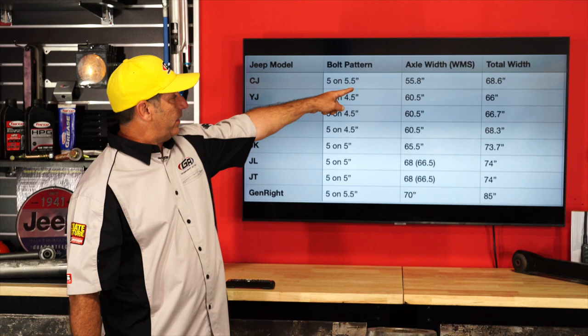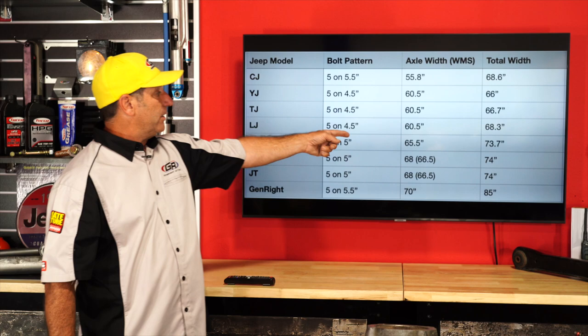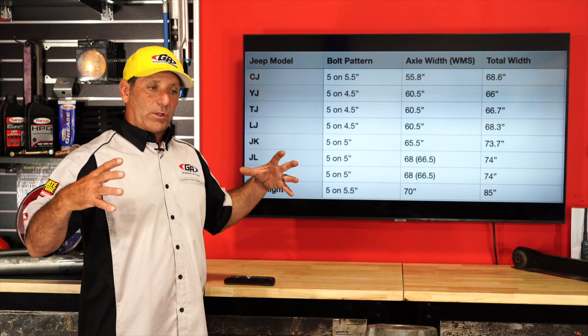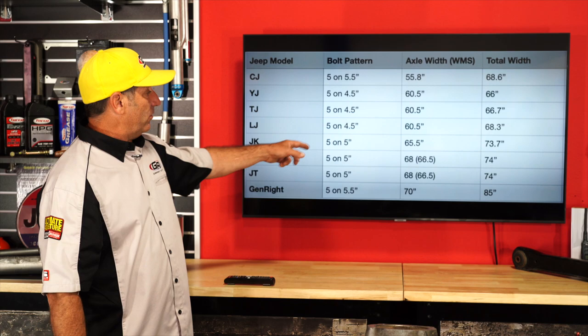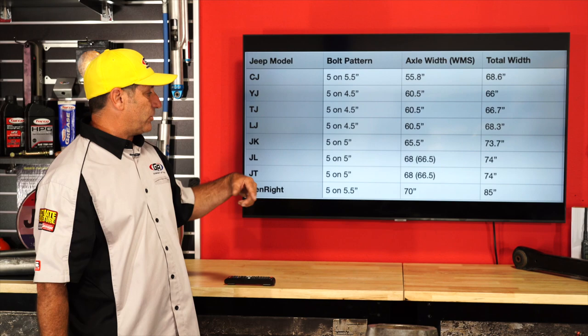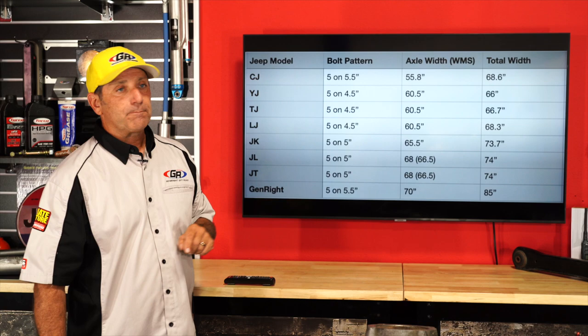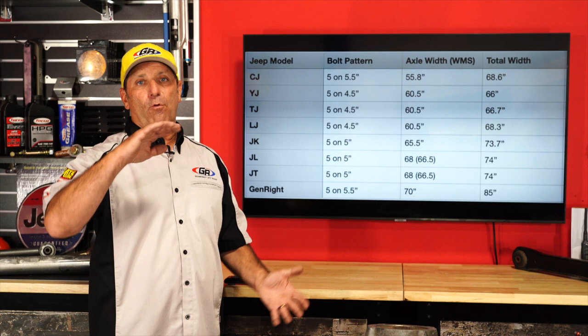The YJ is 60 and a half inches, TJ 60 and a half, LJ 60 and a half. The JK went a lot wider at 65 inches — they started to figure out that they needed more backspace to reduce the scrub radius. The JL went a little wider to 68, JT same at 68. The Gen Right Jeep comes in at 70 inches — with 14 inches of travel you can clear a 42-inch tire, so 70 is the magic number.